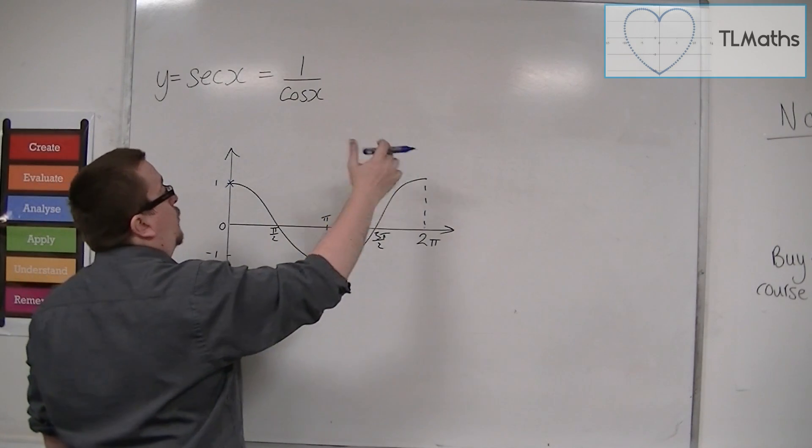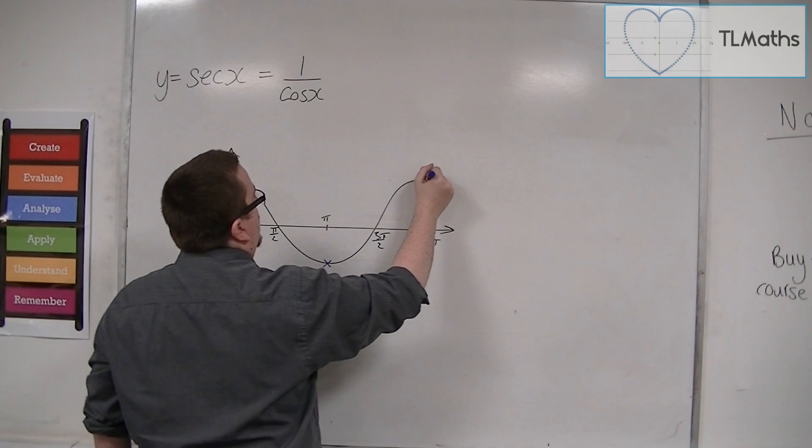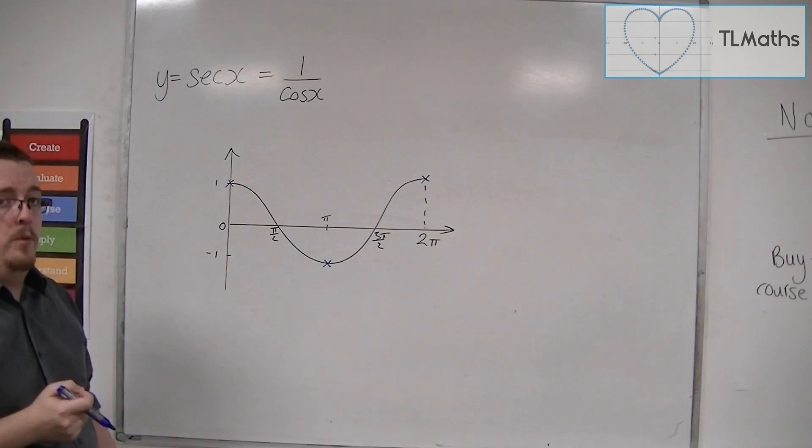And cos of 2 pi is 1. So 1 over 1 must be 1. And so the curve must go through that point.